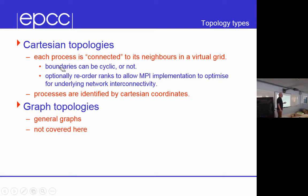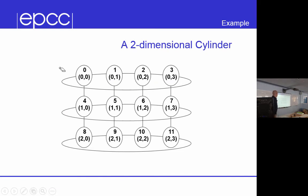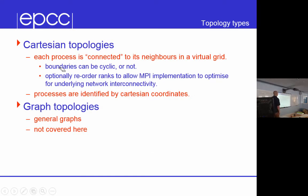In a Cartesian topology we have a specified number of dimensions. Each processor is connected to its neighbors in a virtual grid. The boundaries may be cyclic or not — just like this example where each processor is regularly connected to its neighbors, with cyclic boundaries in one dimension but not in the other. You can also tell MPI whether you want it to reorder your ranks when it creates this topology. You can tell it to keep the same ranks as in MPI_Comm_World, or you can ask it to change the ranks around to optimize communications if possible.